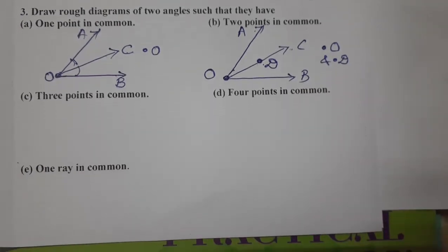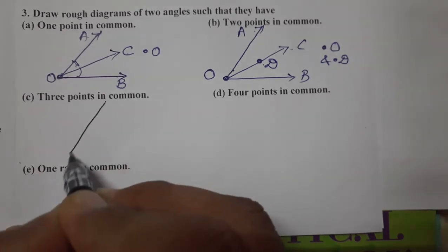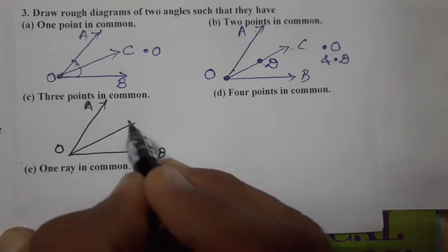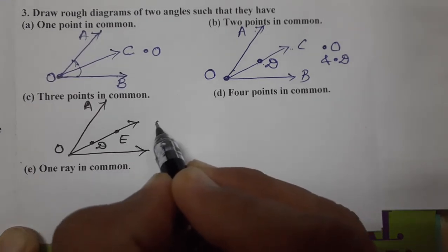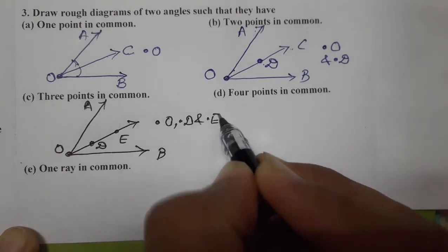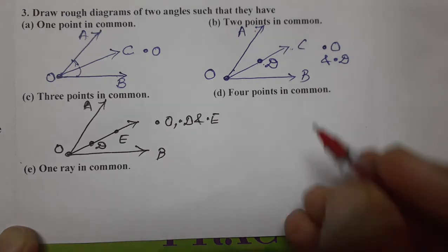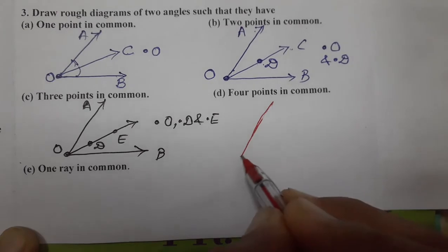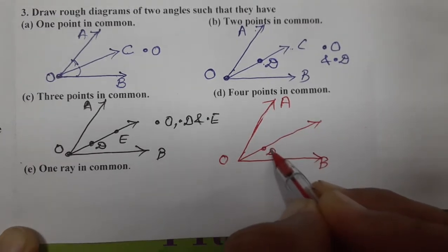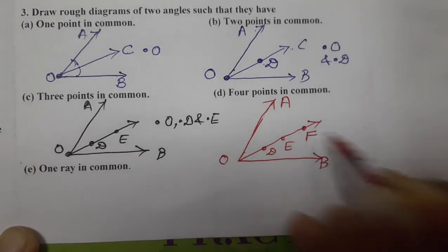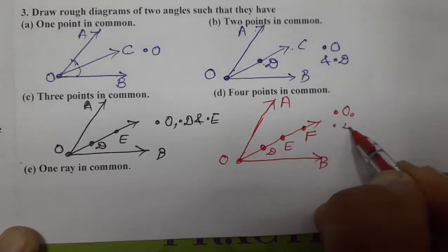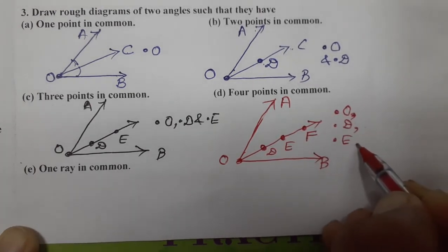Now the third part: three points in common. Using the same diagram A, O, B — adding point D and point E — the common points are O, D, and E. For four points in common, using diagram A, O, B with points D, E, and F — the four common points are O, D, E, and F.